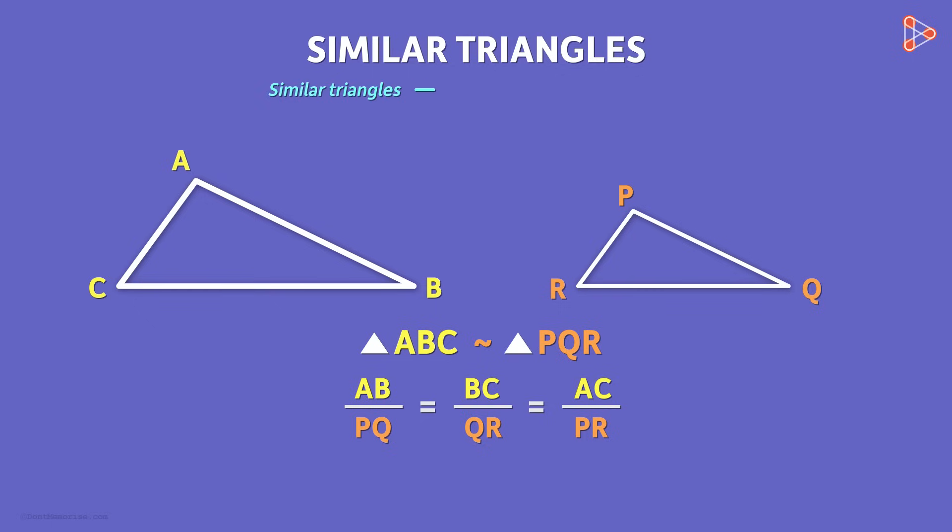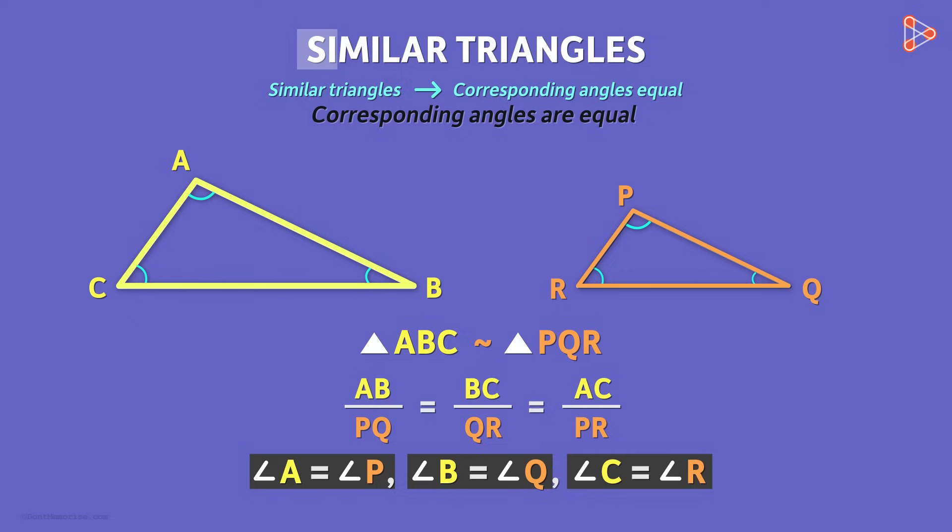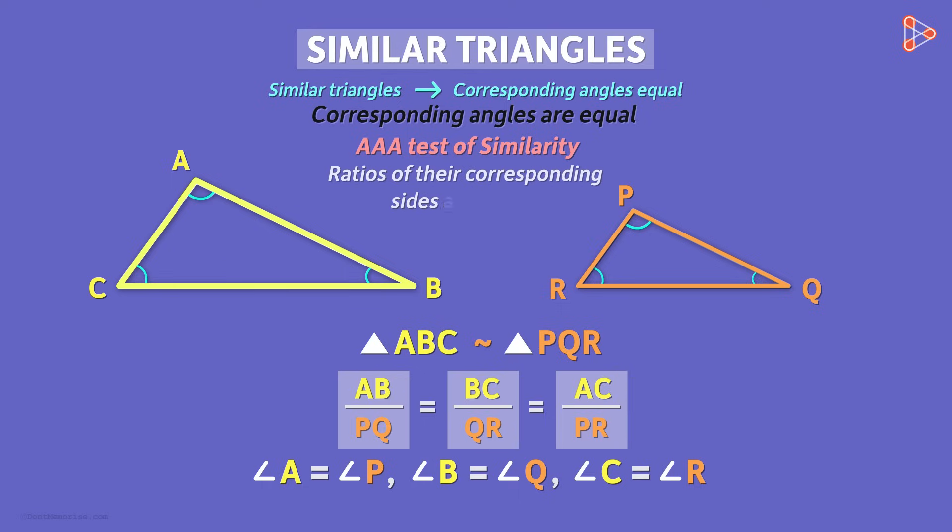The second thing about two similar triangles is that all the corresponding angles have the same measure. For example here, angle A is equal to angle P, angle B is equal to angle Q and angle C is equal to angle R. This also works in the reverse. That is, if for any two triangles, if we prove that their corresponding angles are equal, then they are similar triangles. This is called AAA test of similarity for proving two triangles similar. Similarly, if the ratios of their corresponding sides are equal, then the triangles are similar.